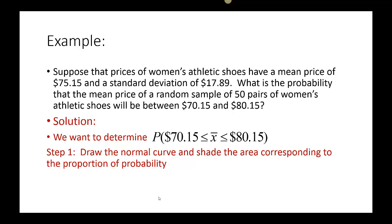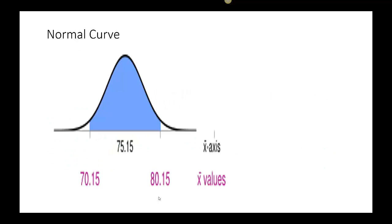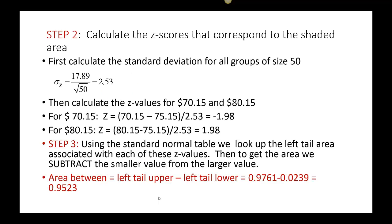We put that in probability notation. Just as when we found the area under the normal curve, we draw the normal curve and shade the area corresponding to the probability. The curve is centered around the population mean, which is also mu of X-bar, at $75.15. We want the area between the two given values. First, we calculate the standard error: sigma X-bar equals $17.89 divided by the square root of 50, which gives us approximately $2.53.